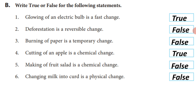B. Write True or False for the following statements. First, glowing of an electric bulb is a physical change. True. Second, deforestation is a reversible change. False.